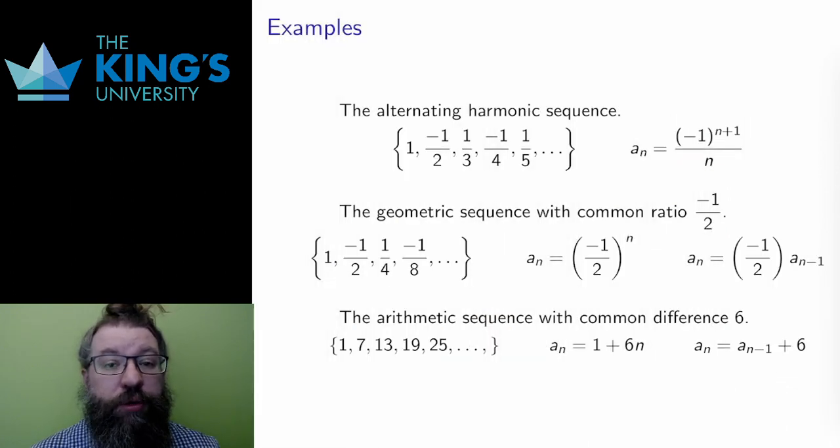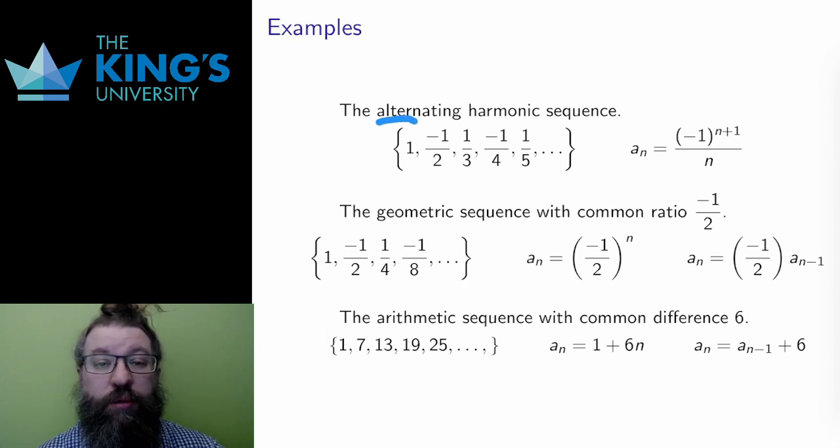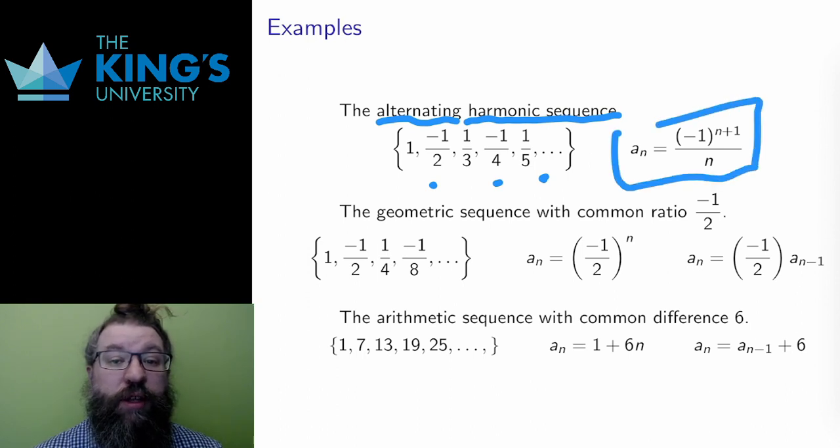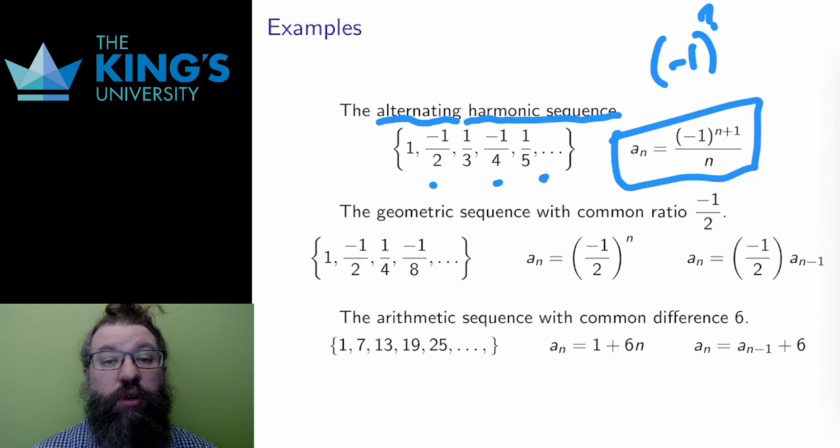If a sequence alternates between positive and negative terms, it is often called an alternating sequence. By taking the harmonic sequence and making each second term negative, I get the alternating harmonic sequence. The formula is a_n equals negative 1 to the n plus 1 over n. To alternate its signs, negative 1 to some power is used. As the power is even or odd, the product of negatives will either be positive or negative.